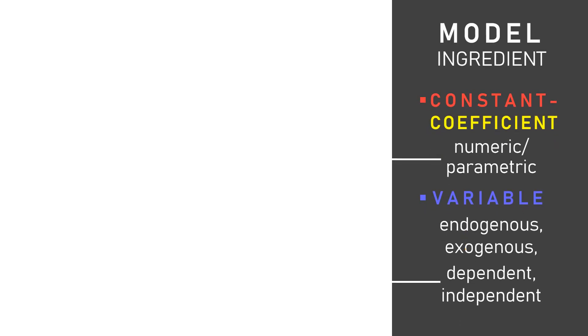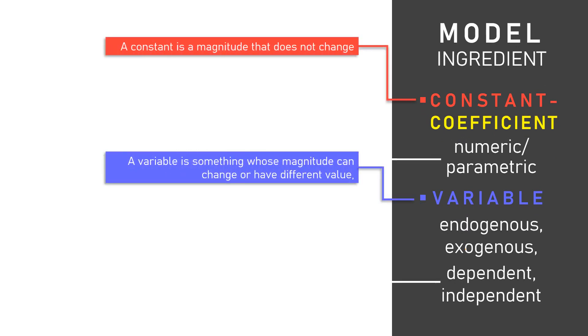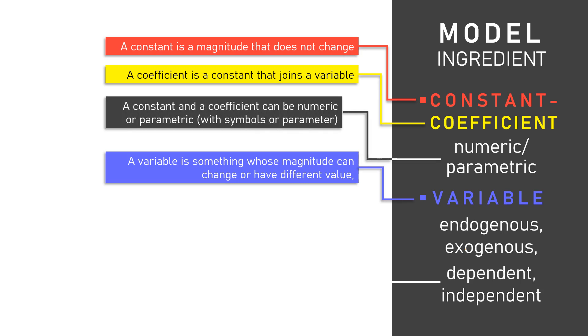Now, let's turn our attention to the model ingredients. Basically, we have two elements: constant and variable, with clear definition here. A coefficient is actually a constant too, but it attaches to a variable in the equation. Constant and coefficient can be expressed numerically with number or with parameters. And with parameters or symbols, constant and coefficient now have a variable characteristics. They can have any value. But please understand this. Once the value of constant and coefficients are determined in one particular function, the values are fixed. Hence, they are parametric constants and coefficients or simply called constants and coefficients in nature.